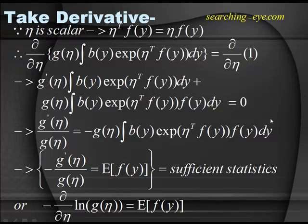This is a very simple property. The distribution g(η) times b(y) exponential(η^T f(y)), multiplied by f(y) and integrated over y, gives the expected value of f(y). So taking the negative sign, negative g'(η) over g(η) equals the expected value of f(y). This is known as a sufficient statistic.